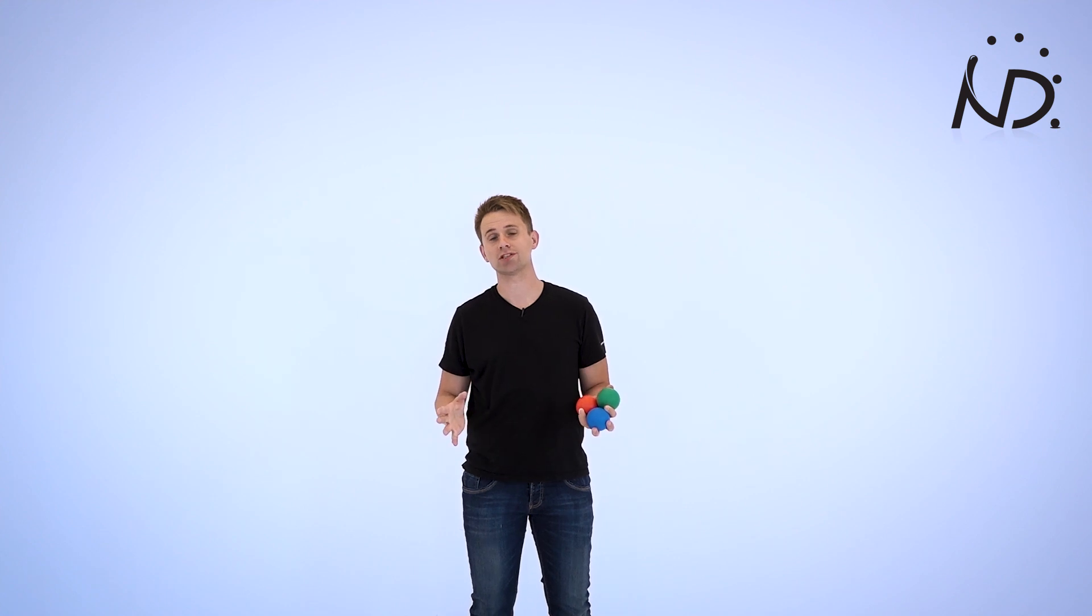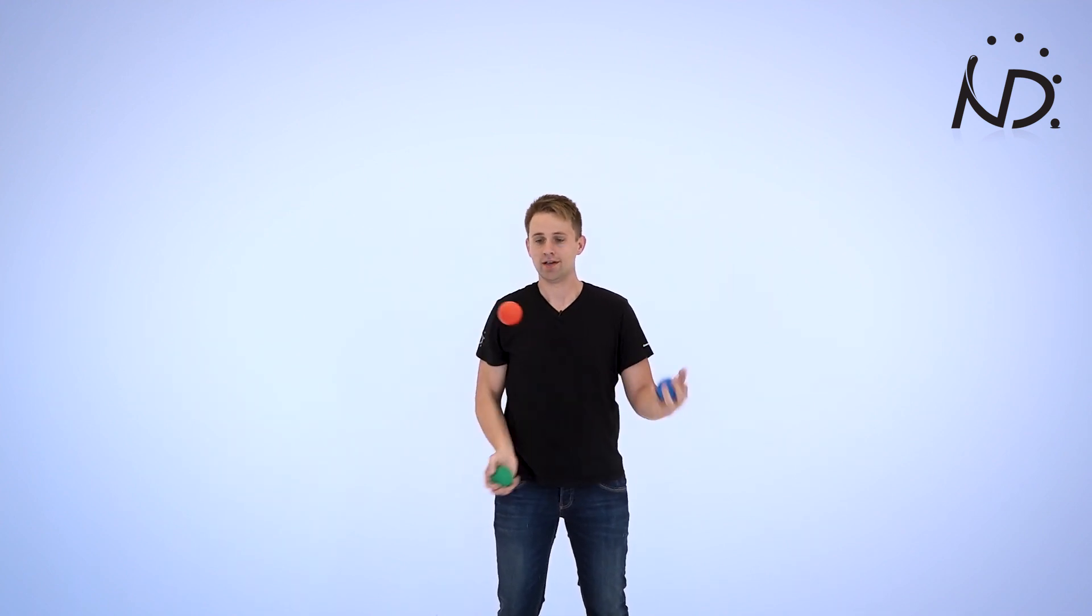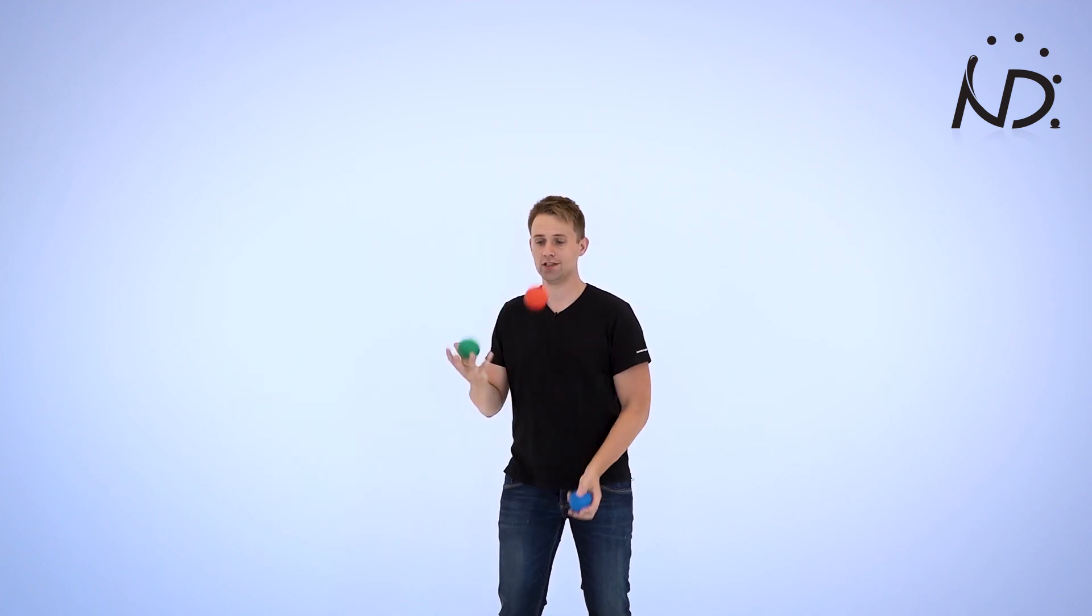So if you can juggle a three ball cascade, you can do this trick right away. And here's a bonus trick. If you're bored of bouncing it on your elbow or your neck, on your leg, bounce it on your t-shirt.